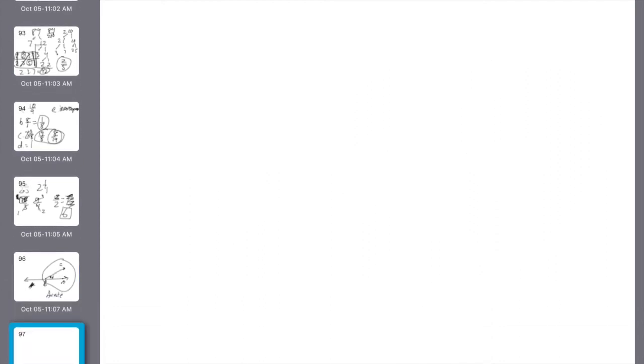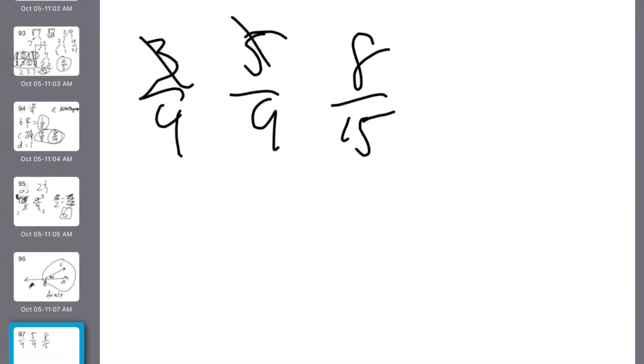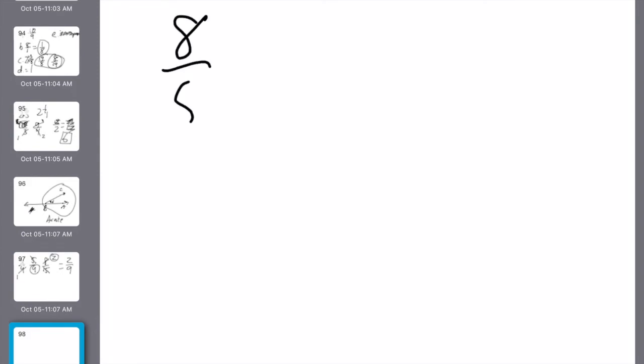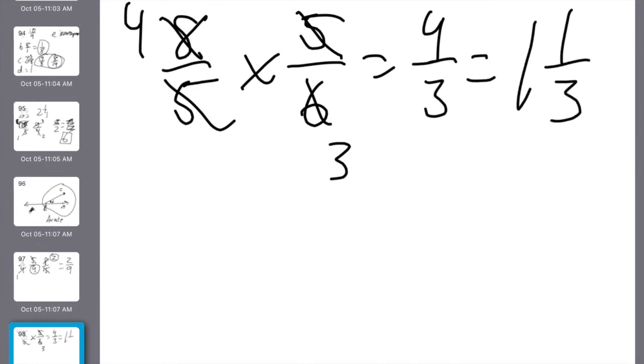Flipping my answer key over, number 21. We have 3 fourths times 5 ninths times 8 fifteenths. 3 times 5 is 15. They're all gone. 4 goes into 4 once. 4 goes into 8 twice. I'm left with this 2 and this 9 as I reduce. So I have 2 ninths. 23. Today's lesson, we got a division problem. 8 fifths. I'm going to write it as I say. Stays the same. Changes to multiplication. Flips over. Fives are gone. Divide by 2 is 3. Divide by 2 is 4. So I have 4 thirds, which equals 1 and 1 third.